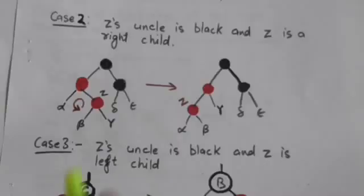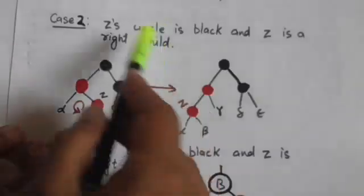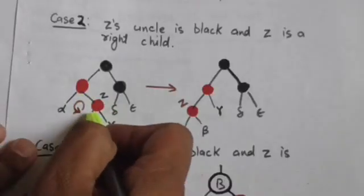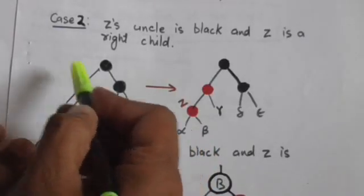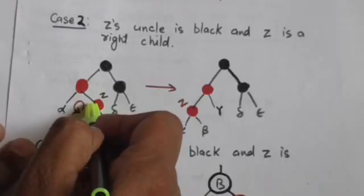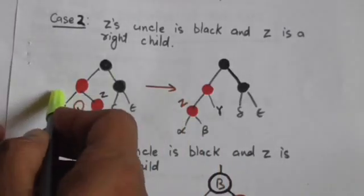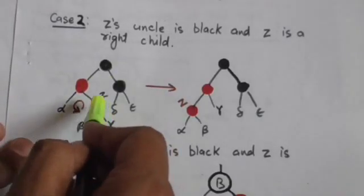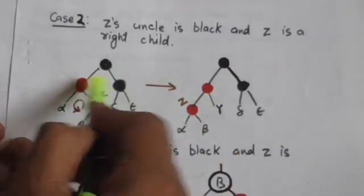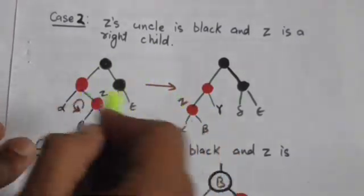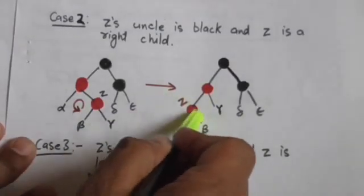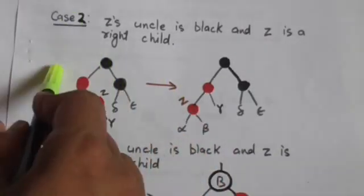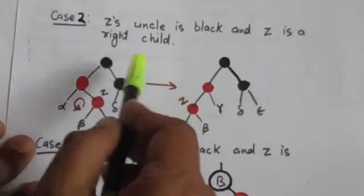In the second case, Z's uncle is black and Z is the right child of its parent, which is red. In this case, we do a left rotation on the parent of node Z. After the left rotation, node Z will become the parent of its former parent. We then consider the left child of node Z as the new node Z. This transforms the situation from case 2 into case 3.